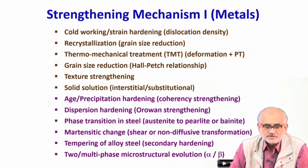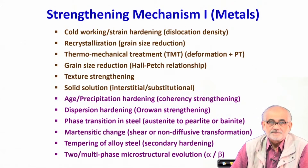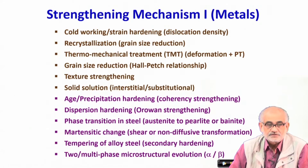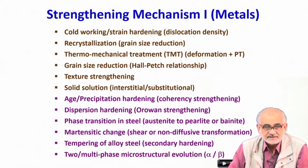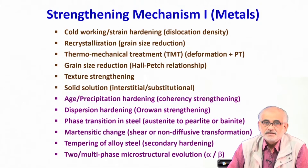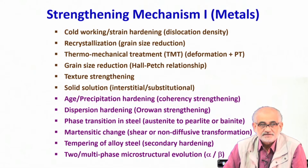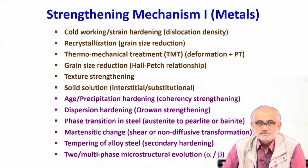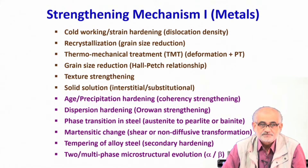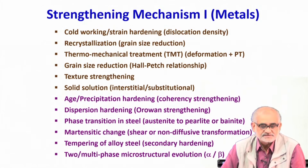Talking about metals and alloys, we are dealing with an aggregate where cations are arranged in three dimensions in a regular and repeated manner with three-dimensional periodicity, and this periodic array is permeated by a free electron cloud. This is exactly the definition which allows us to explain all possible properties of metallic aggregates.